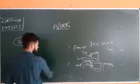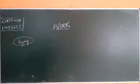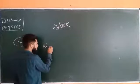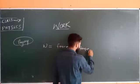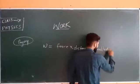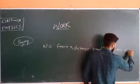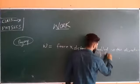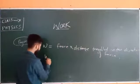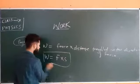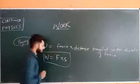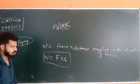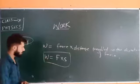Now let's discuss the formula of work. Work is equal to force multiplied by the distance traveled in the direction of force. So: W = F × s, where F is force and s is the distance in the direction of force — the distance traveled by the body on which the force is applied.